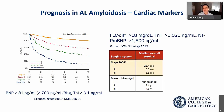The same concept applies with the Mayo Clinic system, which uses troponin T, NT-proBNP, and the differential between the affected and unaffected light chain. When the Mayo system was first reported in 2004, survival was measured in months — even stage 1 patients were looking at roughly a two-year survival. When our results were published, we are now measuring survival in years.